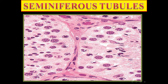At high power we can see spermatogonia in direct contact with the basement membrane, primary spermatocytes with thin threads of chromatin, Sertoli cells with prominent nuclei as supportive cells, and spermatozoa near the lumen. After spermiation they will be inside the lumen.